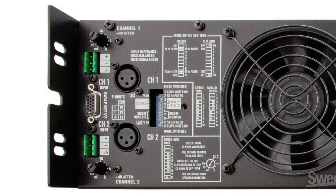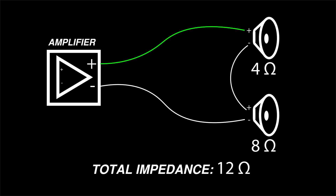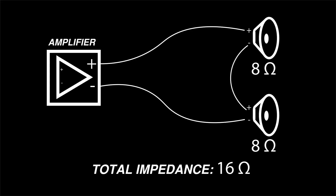Remember that some amplifiers have multiple channels, and those channels should be thought of as independent for the purposes of this discussion. The second scenario is connecting multiple speakers to a single amp channel in series. This means that the speakers are daisy-chained: the positive amplifier terminal is connected to the positive terminal of the first speaker, the negative speaker terminal is connected to the positive terminal of the next speaker, and so on, until the last speaker completes the circuit to the amplifier's negative terminal. When speakers are connected in series, their total impedance can be found by simply adding the nominal impedance of each speaker together. Two 8 ohm speakers in series equal 16 ohms. An 8 ohm speaker and a 4 ohm speaker in series equal 12 ohms.